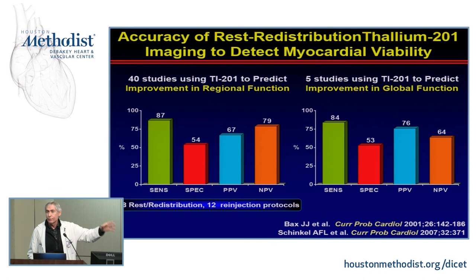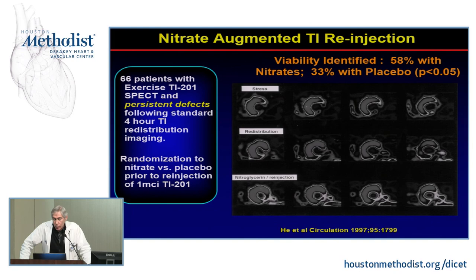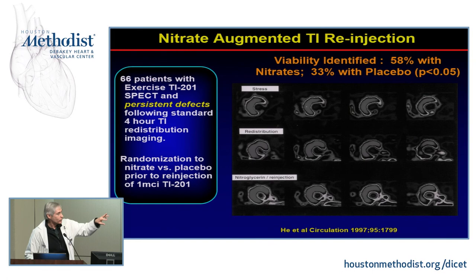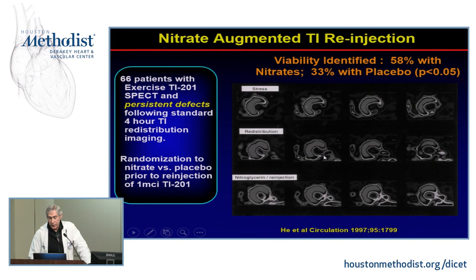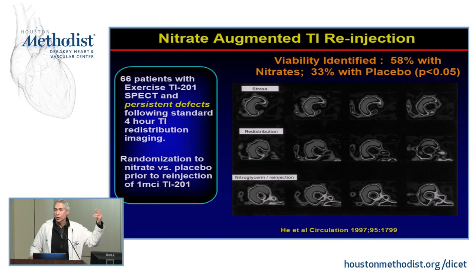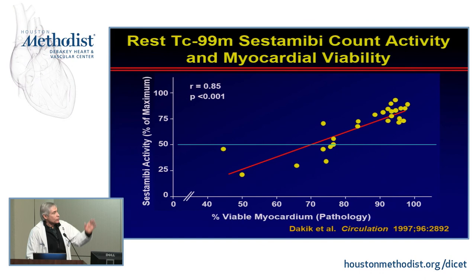Adding nitrates was examined in a 1997 study where patients were exercised, had stress imaging, redistribution imaging, and then were randomized to reinjection with nitro or placebo. In an area with a large perfusion abnormality and very little redistribution, nitrate-enhanced reinjection showed marked improvement in identifying viable tissue. In that study, 33% on placebo had some improvement versus 58% with nitrates — that is why we routinely use nitrates when assessing viable tissue.